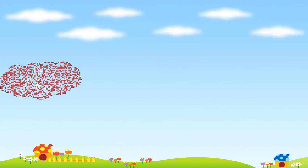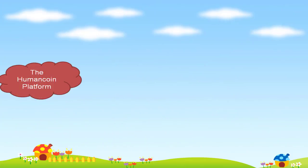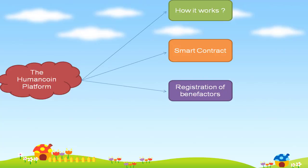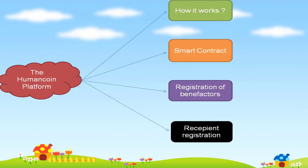About the Humankind platform, we have 5 features. Firstly, how Humankind works. Secondly, smart contracts. Thirdly, registration of benefactors. Fourthly, recipient registration. And finally, about the Humankind pool.